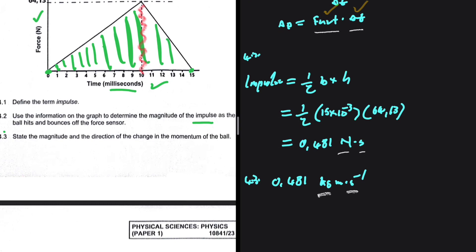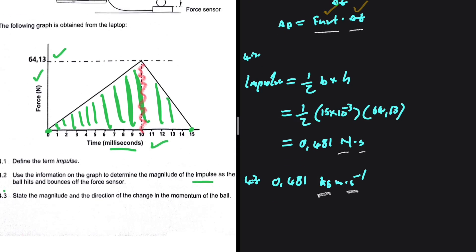We have 0.481 as the magnitude. What about the direction? The ball is being dropped and it hits the force sensor. When it hits the force sensor, the force sensor will apply a force on the ball upwards, so the impulse will be upwards. So the direction we indicate is that it is 0.481 upwards.